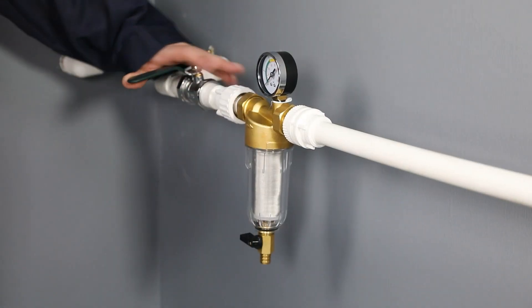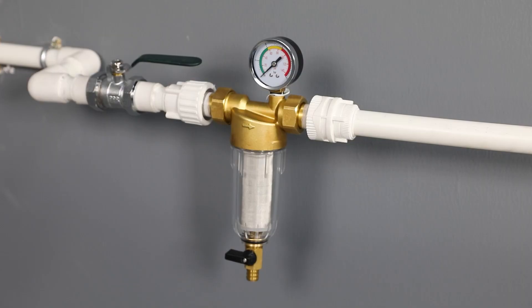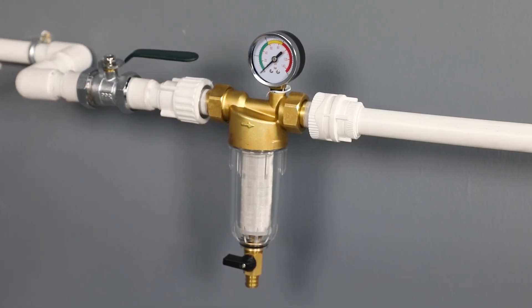Install the pressure gauge. And finally, turn on the main water line. Make sure that there are no leaks and that the filter is working properly.